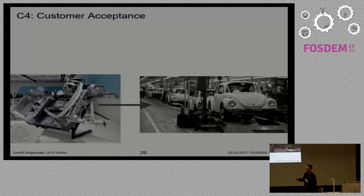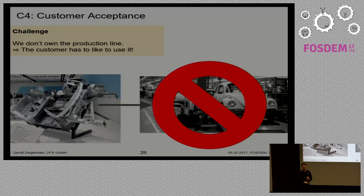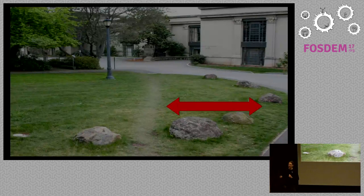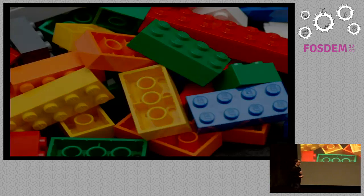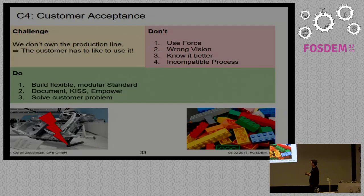Fourth challenge: customer acceptance. We don't own the production line because we've separated first and second level support from development. The people responsible have to like our solution. If we build a standard saying 'we know the better way,' we end up with something nobody uses. We need to provide the right modules and results so customers can do their work. The solution: build flexible modular standards, document them, keep them simple, and empower our users and customers to use the standard. On testing: you can automate and get great tests, but never forget what your test coverage should be — if you don't test what the customer wants, that's a problem.